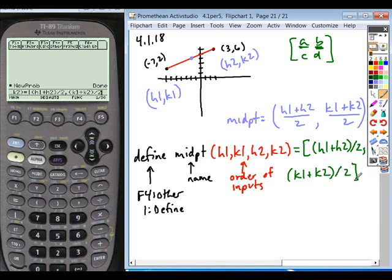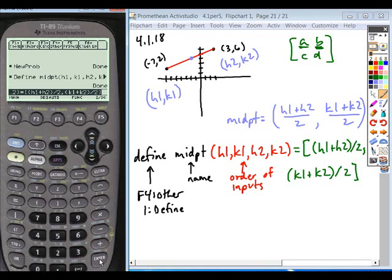So here we're done. We can just close off our brackets. And when we hit enter, it'll say done. And now midpoint should be added to your var length menu.